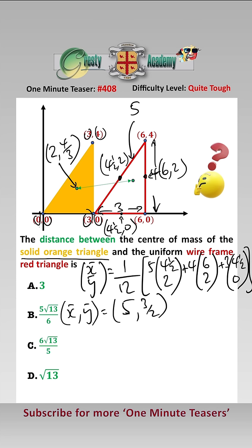So we now have the two centre of masses, 5, 3 over 2 for the wire frame and 2, 4 over 3 for the solid laminar. All we need to do now is find the distance between them.